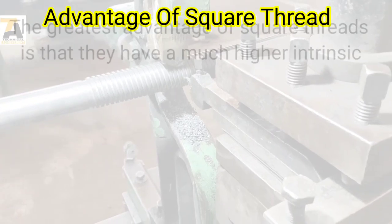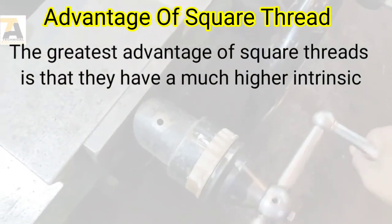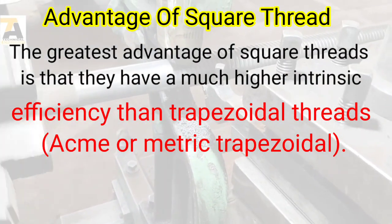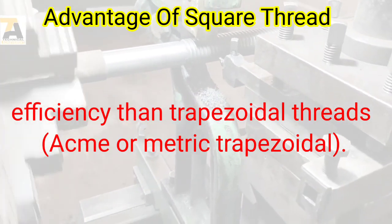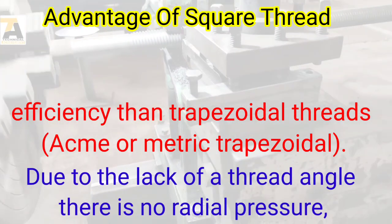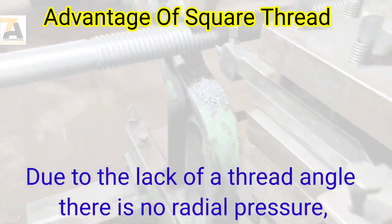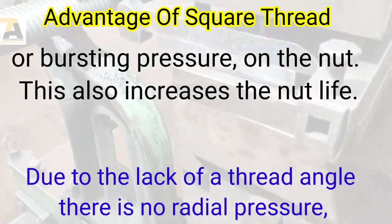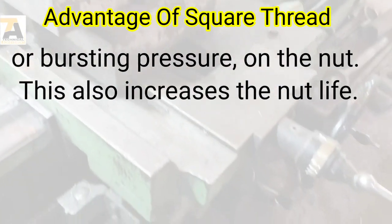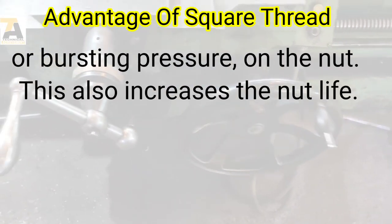The greatest advantage of square threads is that they have a much higher intrinsic efficiency than trapezoidal threads — ACME or metric trapezoidal — due to the lack of thread angle. There is no radial pressure or bursting pressure on the nut, which also increases the nut life.